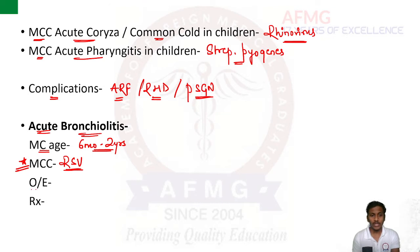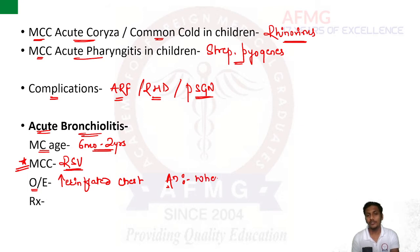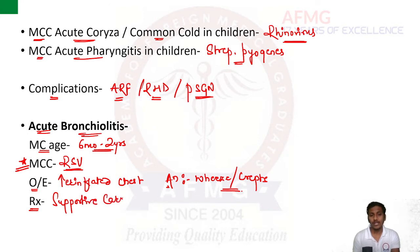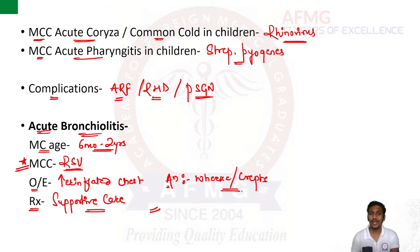On examination there would be a hyperinflated chest. On auscultation, two important findings: wheezing and crepitations. Treatment is generally supportive; if there is severe respiratory distress, oxygen therapy can be given. If they ask specifically about the most specific treatment in acute bronchiolitis due to RSV, the answer is nebulized ribavirin.